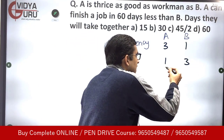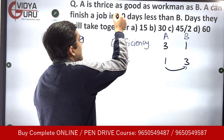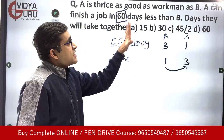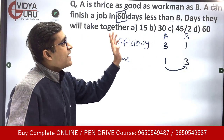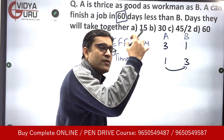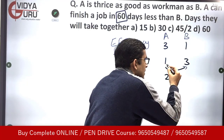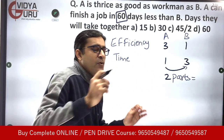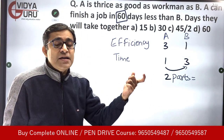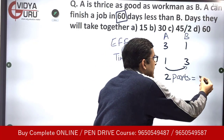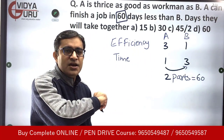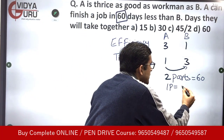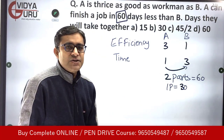Now let's compare with what has been given. B will take 60 days more, and A will take 60 days less than B. So the gap is what? Between 1 and 3, the gap is two parts. This gap of two parts is equal to 60 days. So two parts equals 60 days, which means one part is automatically equal to 30 days.